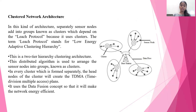Cluster Network Architecture: In this kind of architecture, sensor nodes are grouped into clusters, which depends on the LEACH protocol — Low Energy Adaptive Clustering Hierarchy. This is a two-tier hierarchy clustering architecture. The distribution algorithm is used to arrange sensor nodes into groups known as clusters. In every cluster formed, the cluster head creates TDMA — Time Division Multiple Access — plans. It uses the data fusion concept to make the network energy efficient.